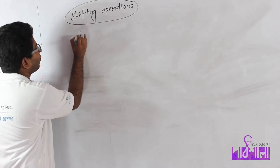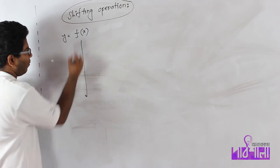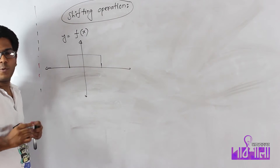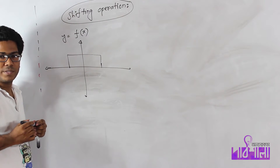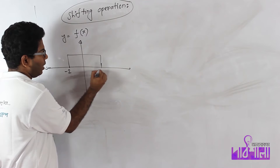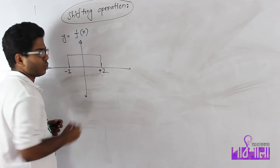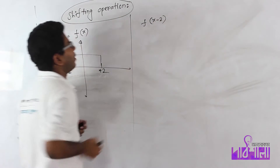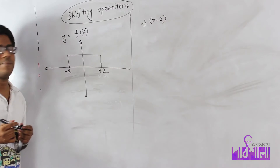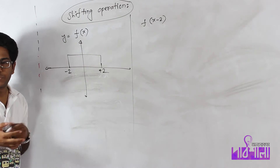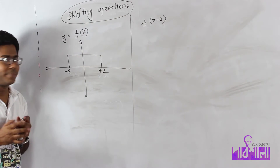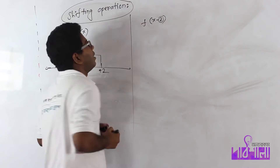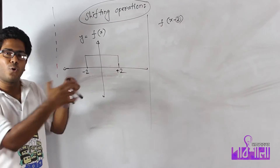This is y equal to f of x. Here it is minus 2 and plus 2. We have to do that. f of x minus 2 will be equal to 1. For example, the graph is shifted by 2.